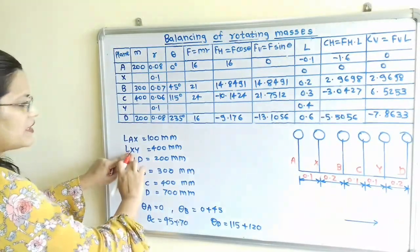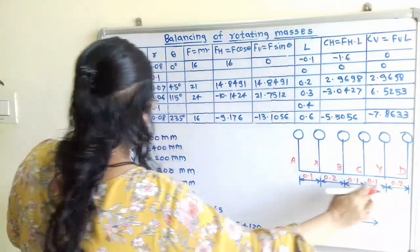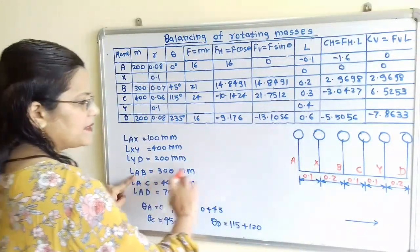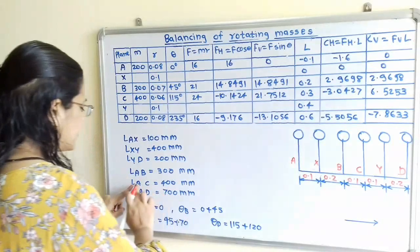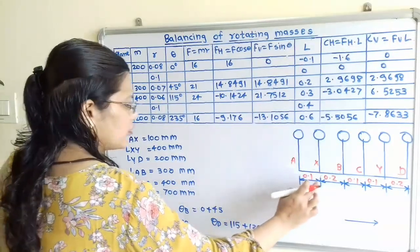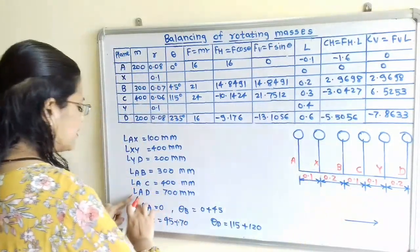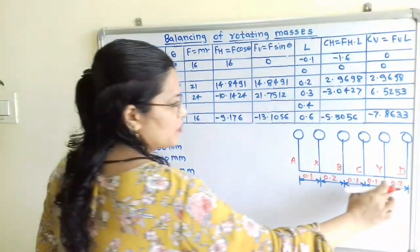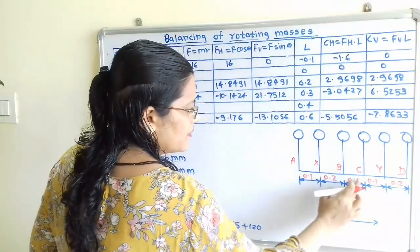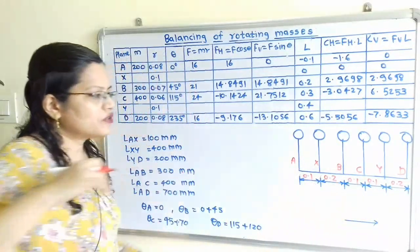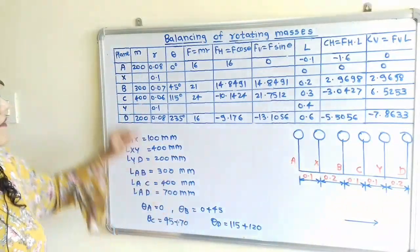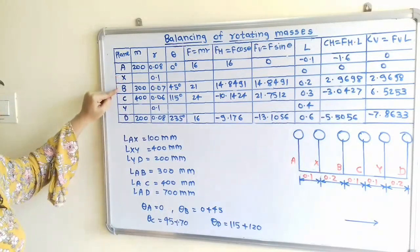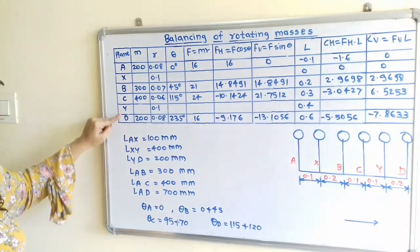Cross-checking: between X and Y the total distance is 400 mm or 0.4 meter. Between A and B is 300 mm, A and C is 400 mm, and A and D total distance is 700 mm or 0.7 meter. This confirms the sequence. So the planes in order are: A, X, B, C, Y and D. We will now mention these planes as the first column of our table.